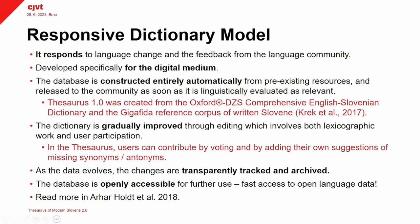Secondly, the database is constructed entirely automatically from pre-existing open language resources, and then it is released to the community as soon as it is linguistically evaluated as relevant. Then thirdly, the dictionary is gradually improved through manual editing, which involves both lexicographic work and user participation. As the data evolves, the changes have to be transparently tracked and archived, and the final database needs to be openly accessible — because that is the whole point: we want to facilitate fast access to open language data.